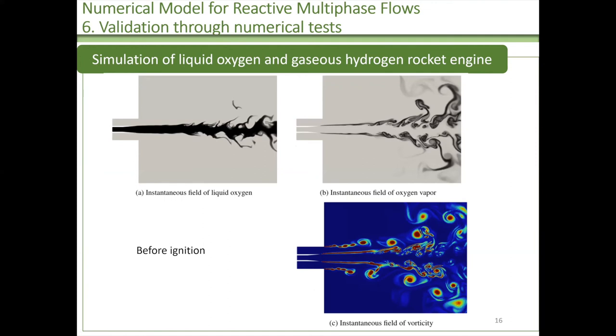With this basic verification, we use the constructed numerical model to simulate the liquid oxygen and gas hydrogen rocket engine. Cold liquid oxygen expands into hot pressure hydrogen, and the liquid jet breaks up due to shear force and transmits to gaseous phase. And this result is before ignition.